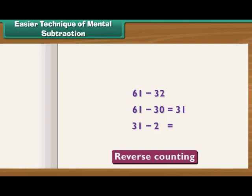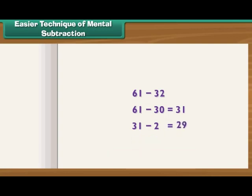Let us look at an easier technique of mental subtraction. To subtract 32 from 61, first subtract 30 from 61. The answer is 31. Now subtract 2 from 31 using reverse counting: 30, 29. 29 is the correct answer.